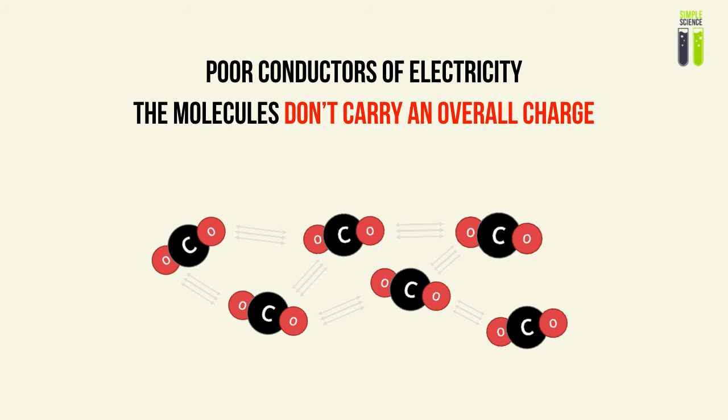Simple covalent compounds are also very poor conductors of electricity. This is due to a basic property of covalent compounds: they do not have an overall charge. Unlike ionic anions or cations which have an overall charge and can carry current when in solution, our covalent compounds have very strong covalent bonds and do not carry an overall charge because they are sharing — not donating or accepting — electrons.